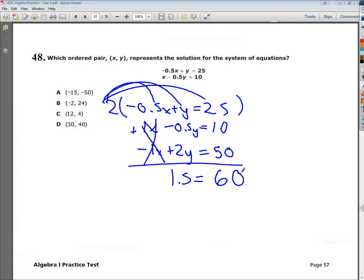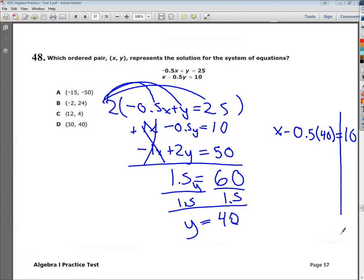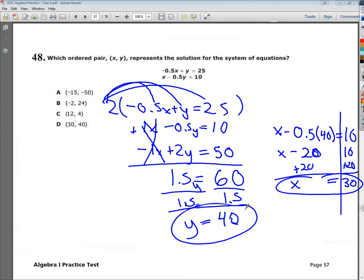Now I just need to solve it by dividing both sides by 1.5. 60 divided by 1.5 is 40. So my y value is 40. Now that I have my y value, to get my x, all I need to do is plug it in to one of the equations. So I'm going to choose the bottom one. 0.5 times 40 is 20. To get rid of minus 20, I'm going to add 20. So my x is equal to 30. That's method 2, elimination.